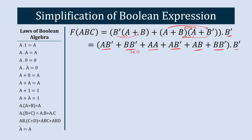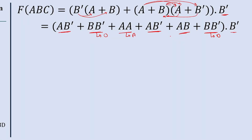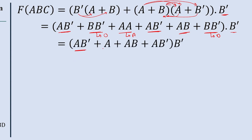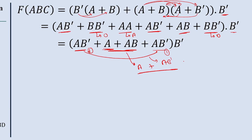Here BB dash results into 0, because A·A dash equals 0, and similarly B·B dash equals 0. A·A results into A by Boolean law. The simplified version becomes: AB dash plus A, AB, AB dash. Combining the two AB dash terms into one gives AB dash. Then A plus AB results into A, so we get A plus AB dash. And A plus AB dash also results into A.